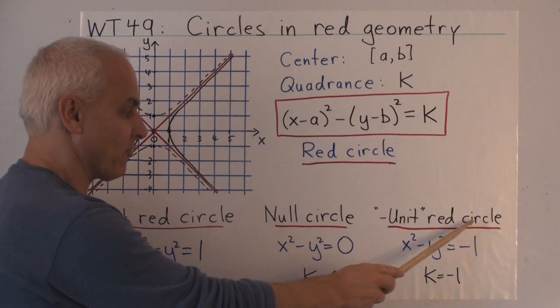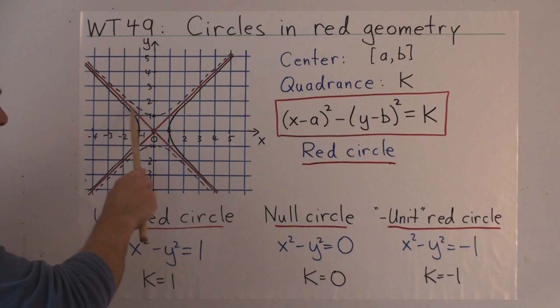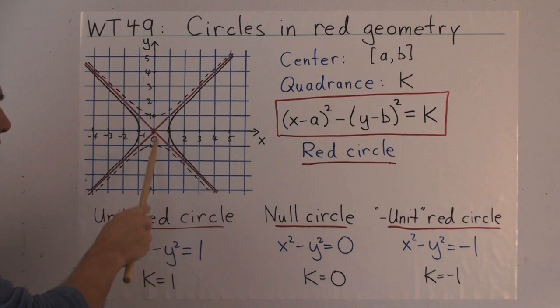Also, we have what we might call the minus unit red circle with equation x² - y² = -1. That's the hyperbola that's dotted here. It has also two branches going through the point (0,1) and (0,-1).